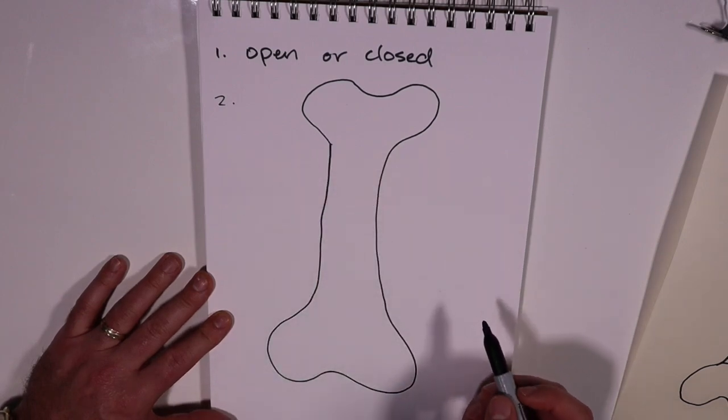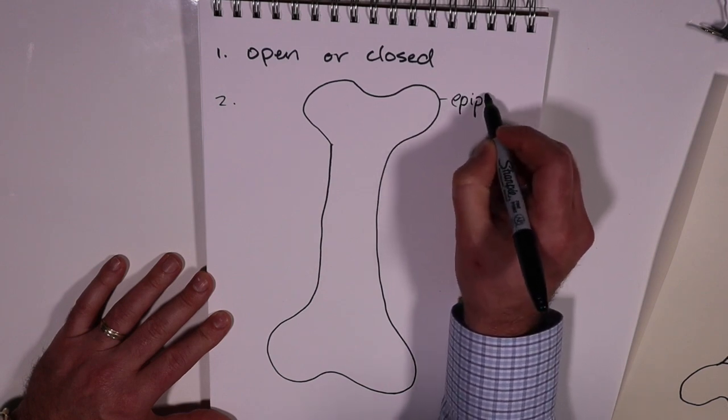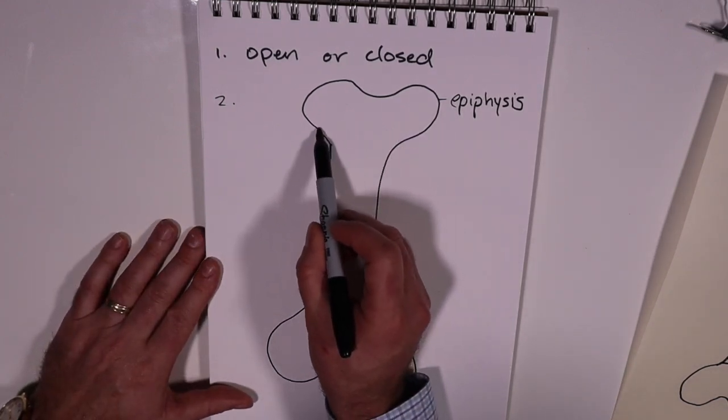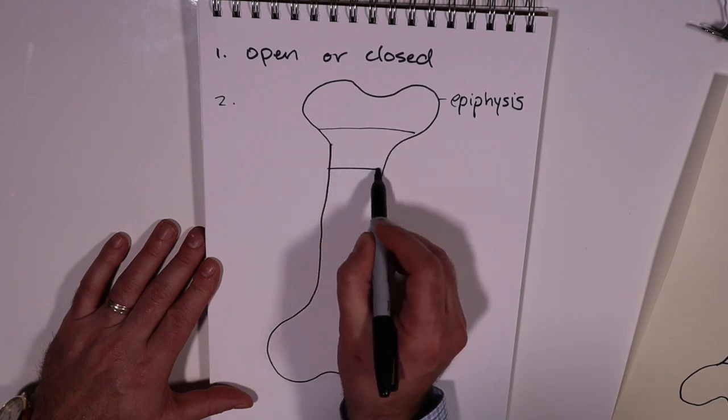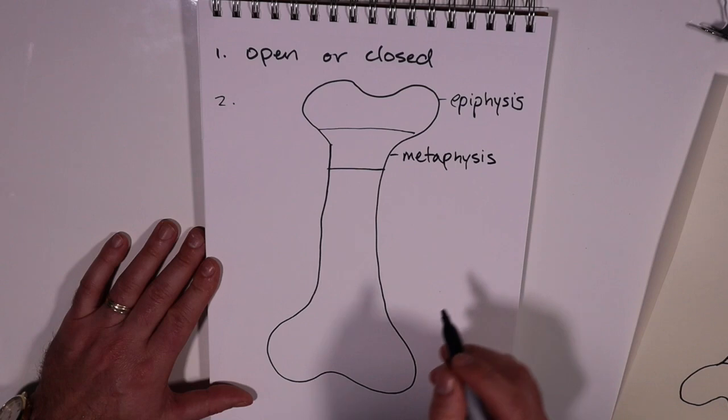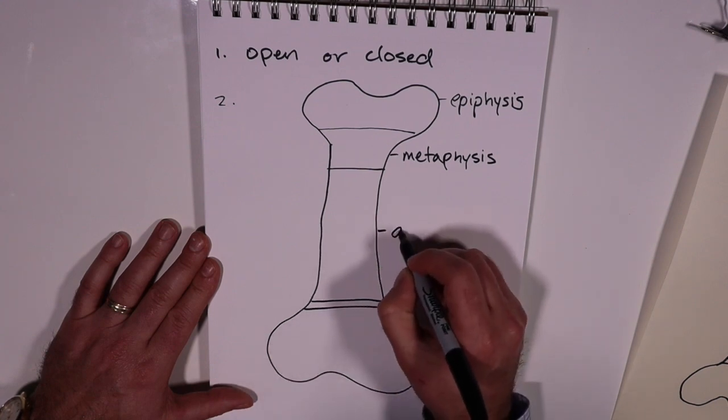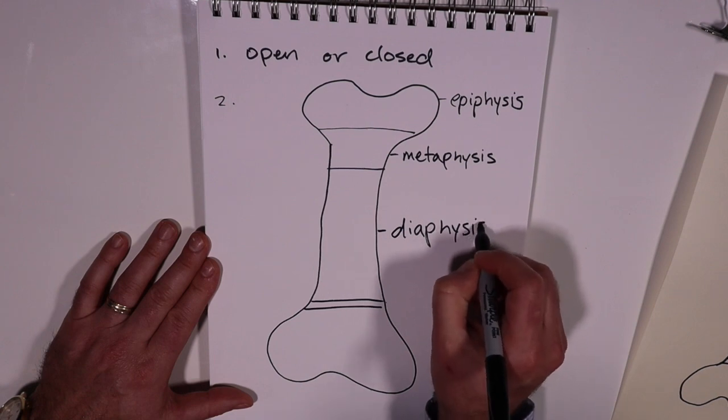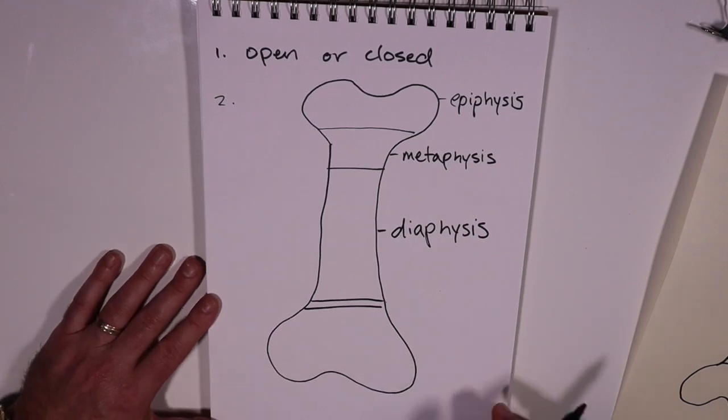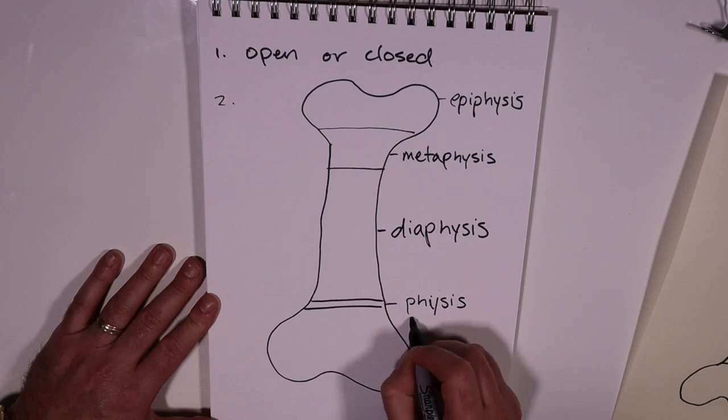All right, looks like my dog bone. So the first location would be at the joint, so that would be the epiphysis. Secondly would be the junction between the epiphysis and the shaft, and that would be the metaphysis. And then, as I mentioned, the shaft or technically known as the diaphysis. And then finally, the fourth possible location, which is specifically for skeletally immature patients, is the growth plate or the physis.